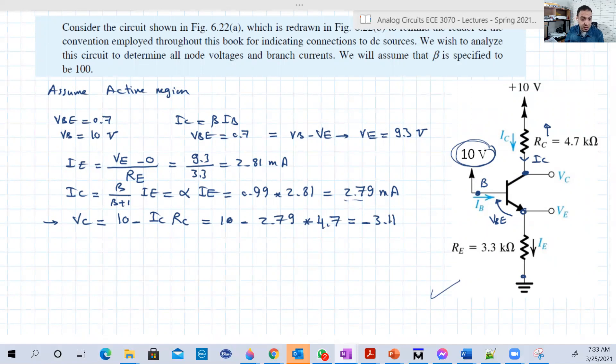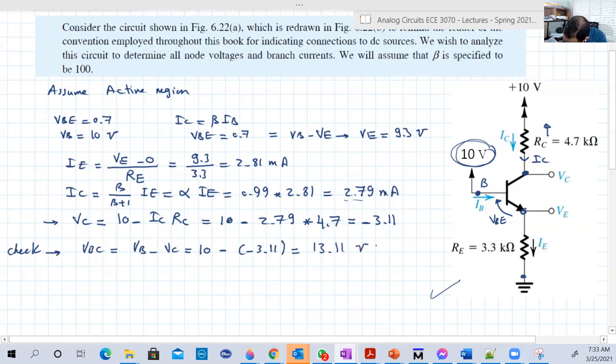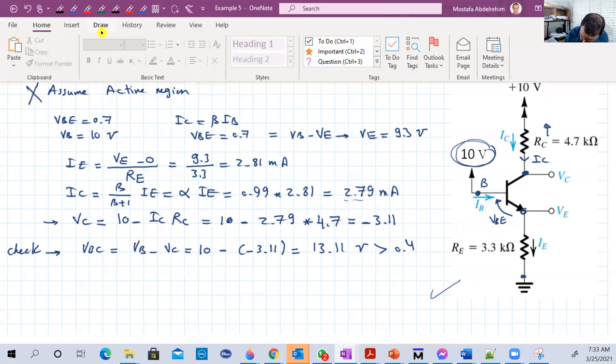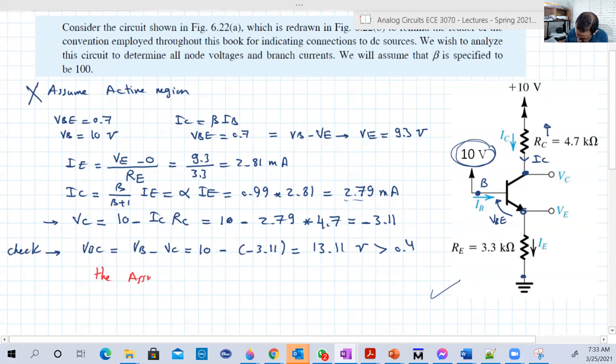But to verify that we are working really in the active region, let's check VBC. So VBC now, this is a moment of truth if we are correct or not correct. VBC, which should be greater than 0.4 in active region, is equal to VB minus VC. VB is 10, VC is minus 3.11. So this is basically 13.11 volts, which is basically greater than 0.4. So the assumption is incorrect.